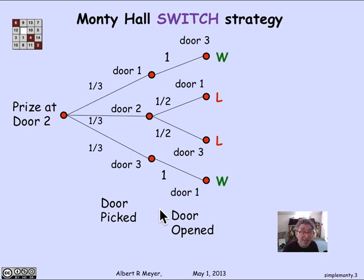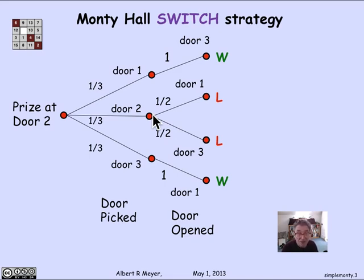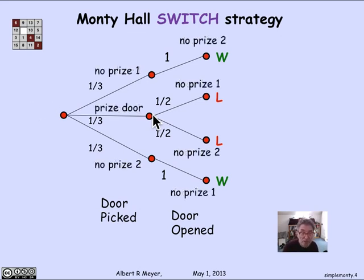Now, a better way to understand this tree is instead of saying the prize is at door two and this is where the contestant chooses door two, and having to worry about all the other branches that are symmetrically like this, we could have reformulated the tree model from the first place by saying: let's consider the cases that wherever the prize is, there are three possibilities — the contestant picks the door where the prize is, or they pick the next door counterclockwise from where the prize is, or they pick a door that's two doors away from where the prize is.